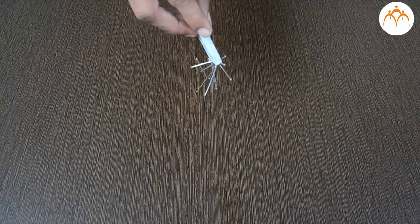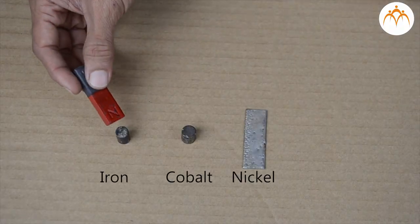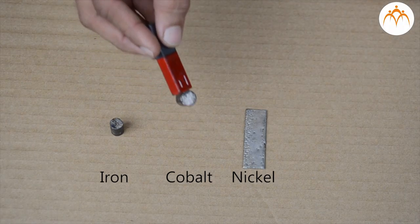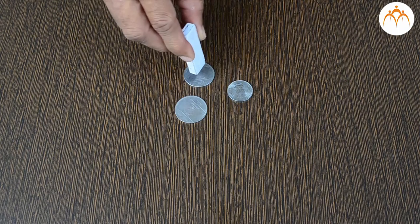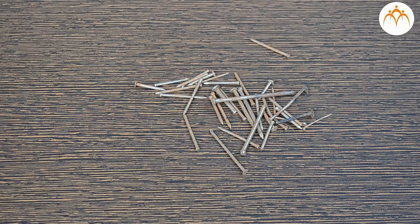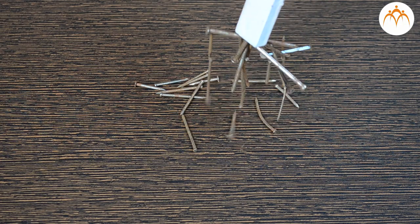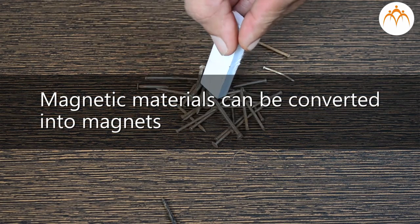The objects attracted by magnet are called magnetic materials. Iron, nickel and cobalt are the magnetic substances. Objects made up of these materials are attracted by a magnet. Also, magnetic materials can be magnetized or we can say that magnetic materials can be converted into magnets.